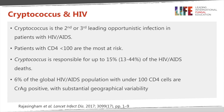Turning to Cryptococcus and HIV: in certain parts of the world, in particular sub-Saharan Africa, it's the second or third leading opportunistic infection in patients with HIV and AIDS. Patients who have a CD4 count of less than 100 are most at risk. This is a serious infection, responsible for 13 to 44% of deaths caused by this organism in HIV patients.